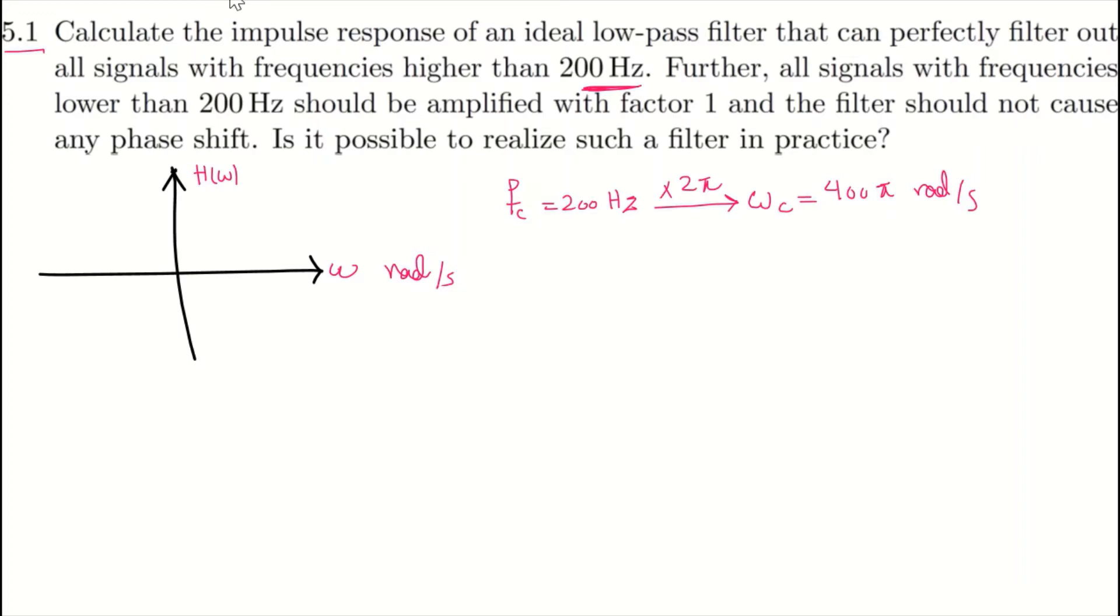This ideal filter is something like this. This is omega C and this is minus omega C. Here it says that the signal in the range of minus omega C to omega C, or signals below 200 Hz in the positive side, should be amplified with factor 1. So that means this is 1. So we have such an ideal filter.